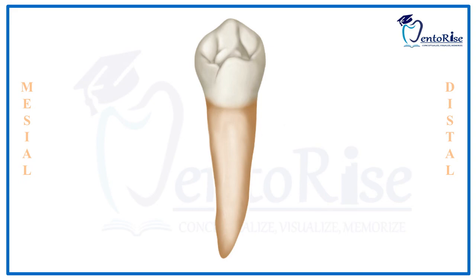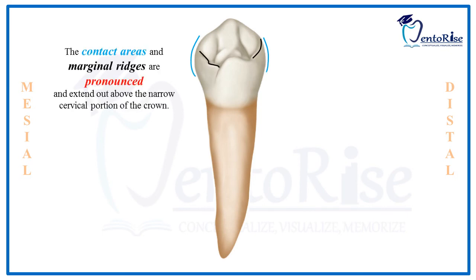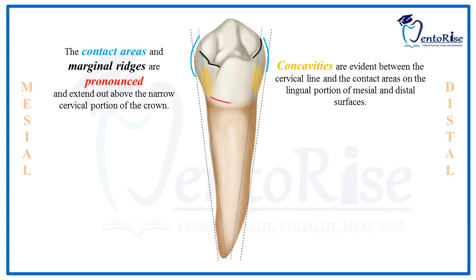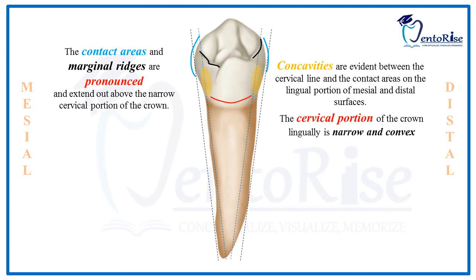Observing the entire lingual surface of the crown, the contact areas and the marginal ridges are pronounced and extend above the narrow cervical portion. Concavities are evident between the cervical line and the contact areas on the lingual portion of the mesial and distal surfaces. The cervical portion of the crown lingually is narrow and convex.